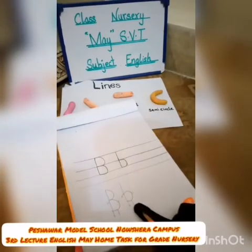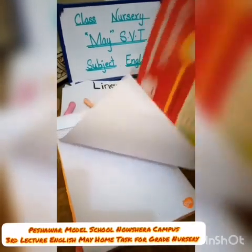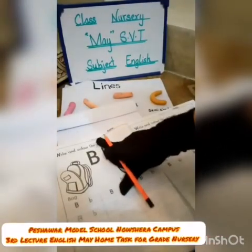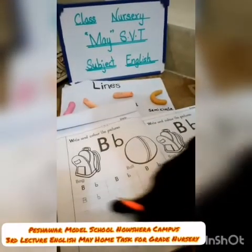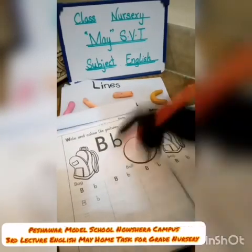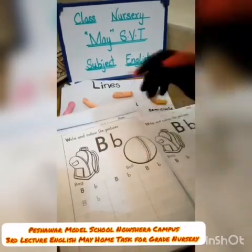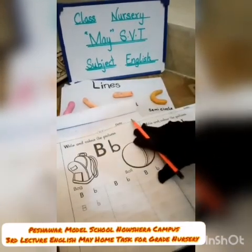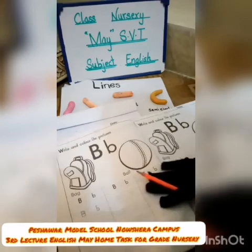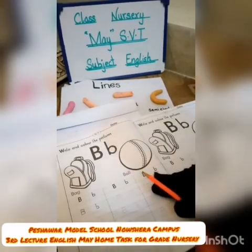So, dear parents, kindly do page number 1010 with your child. Look here — capital B and small b. Trace all the B's, then color the bag and color the ball. Also give them a rough sheet so that they will write without tracing. Thank you so much.